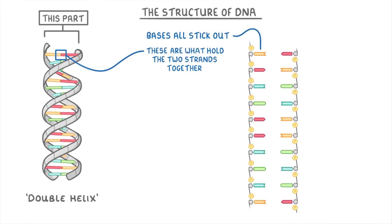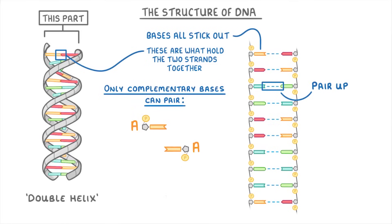If we line up a second strand of DNA facing the opposite way, you can see how the bases could pair up and hold the two strands together. Importantly though, only complementary bases can pair to each other. So A always has to pair with T, and C always has to pair with G.